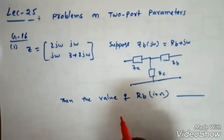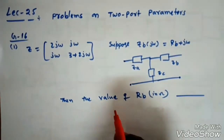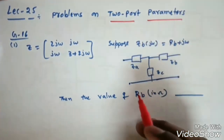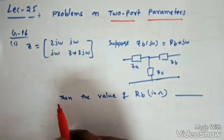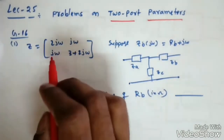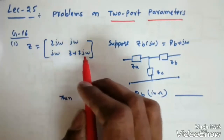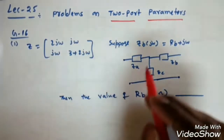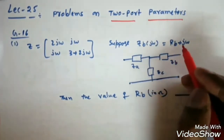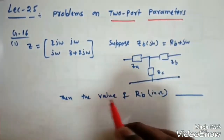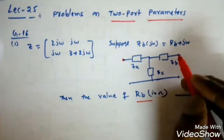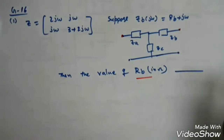This is lecture 25 in network theory, where we will solve some problems on two-port parameters. This is a GATE 2016 problem: Z is given as a matrix with entries 2jω, jω, jω, 3+2jω. Suppose Zb(jω) = Rb + jω, then find the value of Rb. Now since this T-network is given, we know that Z11 = Zda + Zc, and this is the common element Zc.